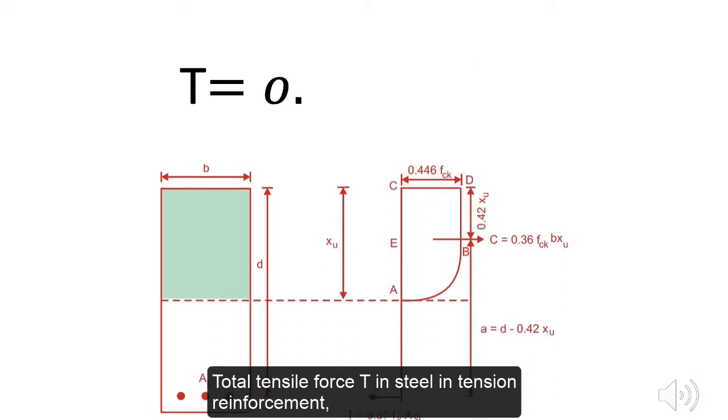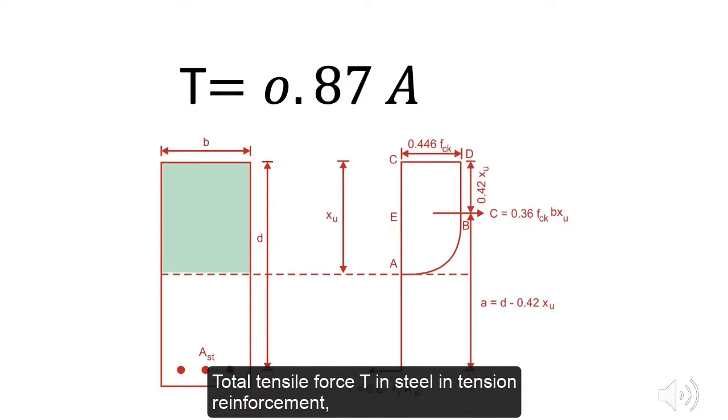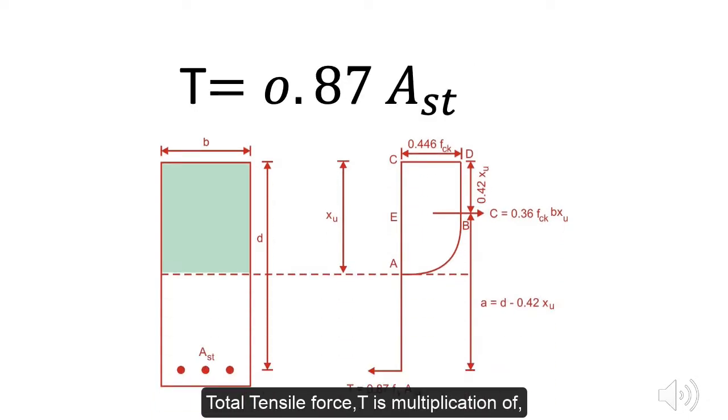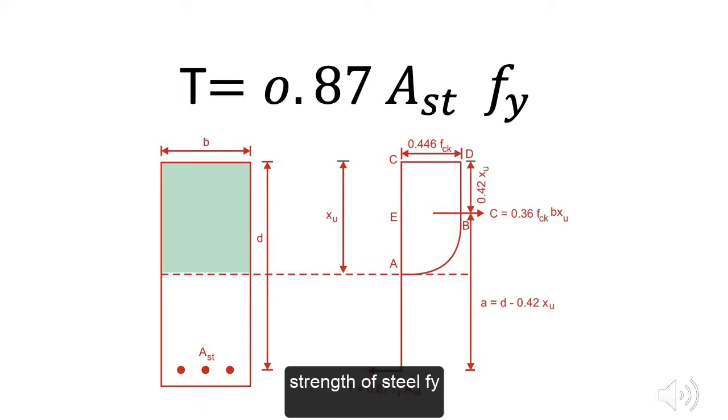Total tensile force T in steel in tension reinforcement. Total tensile force T is multiplication of 0.87, area of steel AST, and characteristic strength of steel FY.